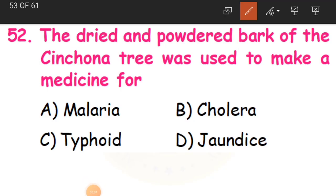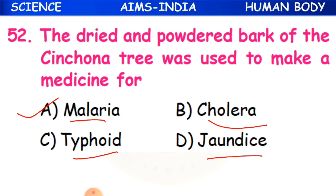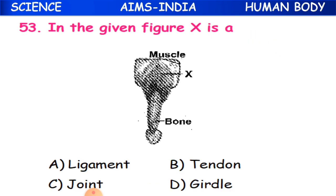Question 52: The dried and powdered bark of the cinchona tree was used to make a medicine for which disease? The options are malaria, cholera, typhoid, or jaundice. The answer is malaria - the powder of the cinchona tree was used to cure malaria fever.